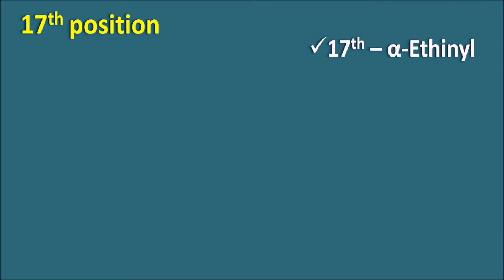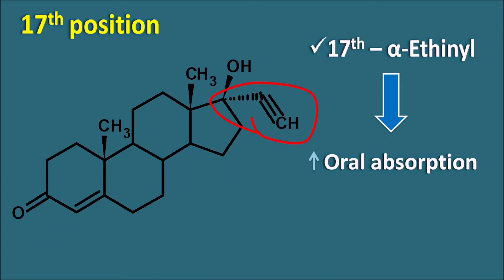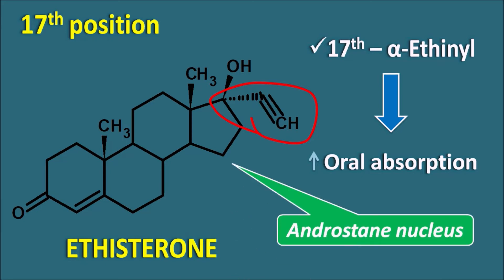At the 17th position, if an alpha-ethinyl group is introduced, it results in increased oral absorption. Already we have seen that progesterone has poor oral absorption, so oral absorption can be increased by alpha-ethinyl substitution at the 17th position. This structure is ethisterone, where the ethinyl group is attached in alpha configuration at the 17th position. Surprisingly, ethisterone does not have the pregnane nucleus — it has the 19-carbon androstane nucleus, making it 17-alpha-ethinyl-testosterone — but this drug still has progesterone activity.